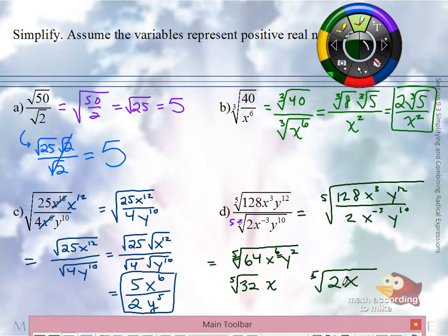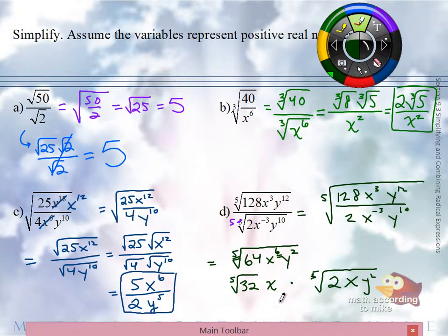5 goes into 2. None. So this y squared still stays underneath. What is the 5th root of 32? So there's 2x outside, and the 5th root of 2xy squared.